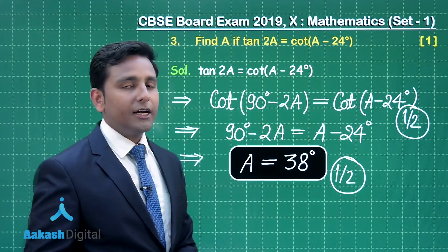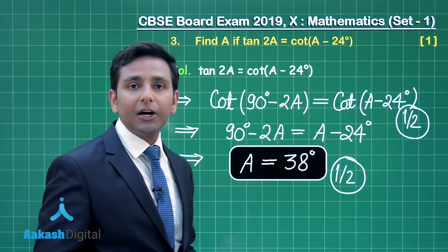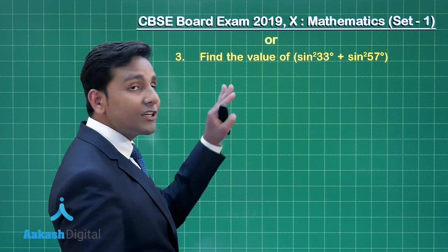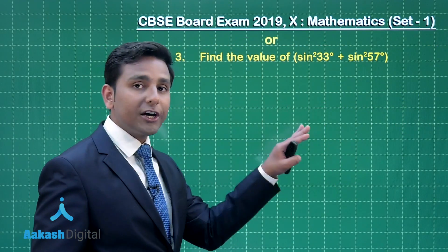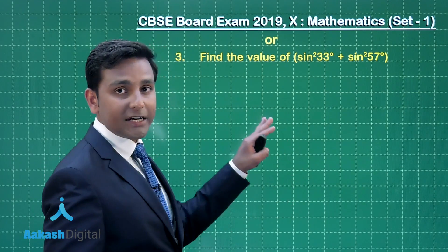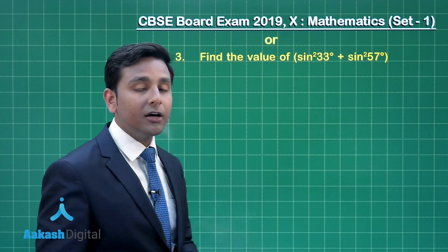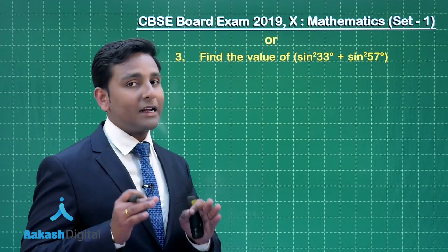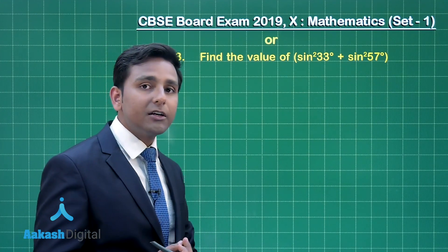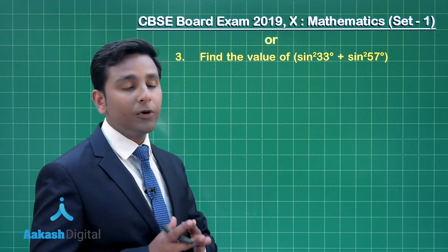I hope you understood. Now let us move on to the optional part of this question. Again this question is from introduction to trigonometry. This is a very simple and straightforward question based on the trigonometric identity: sin²θ + cos²θ = 1.